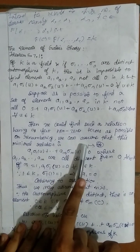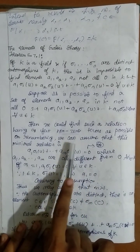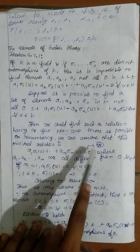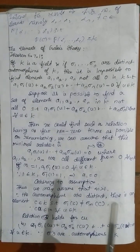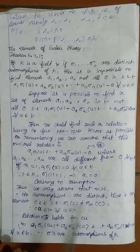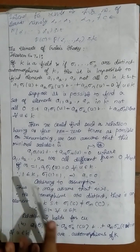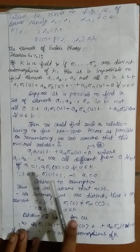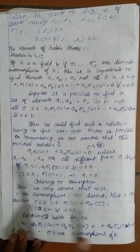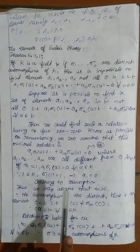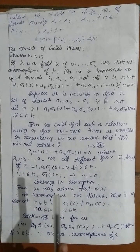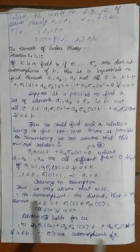By an automorphism of the field k, we shall mean a mapping sigma of k onto itself such that it satisfies two conditions: sigma of (a + b) equals sigma of a plus sigma of b, and sigma of (ab) equals sigma of a into sigma of b. This is true for all a, b belonging to k. If this is true, we say that sigma is an automorphism of the field k. This is just the definition.